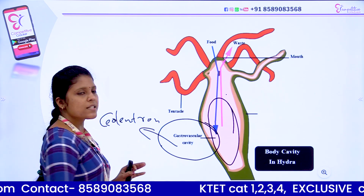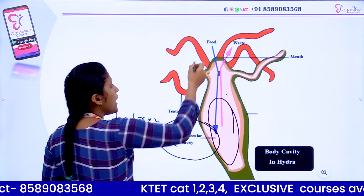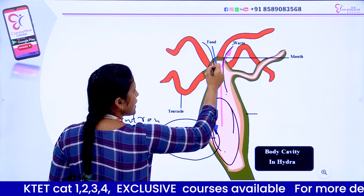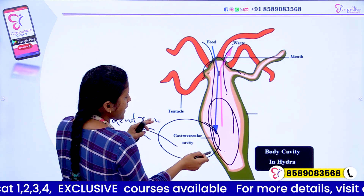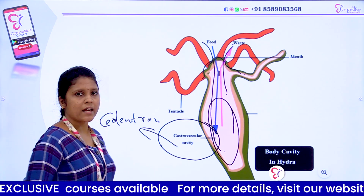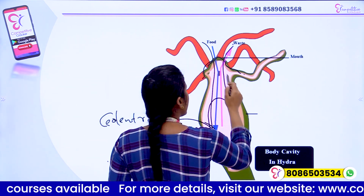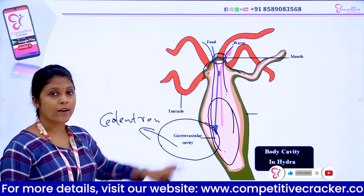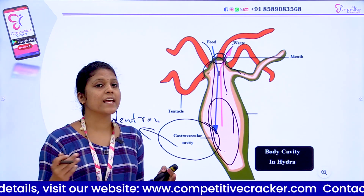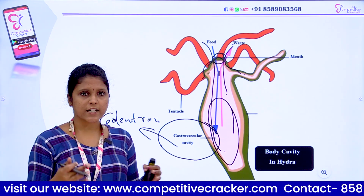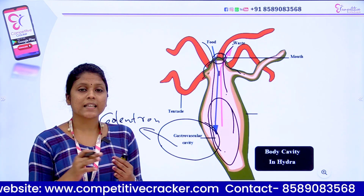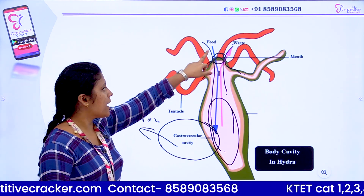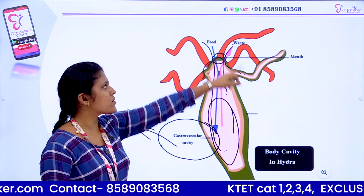This gastro-vascular cavity, the Coelenteron, is also called a blind gut or blind sac. Food enters and waste is also expelled through the mouth — it is a cloaca. That means food comes in through the mouth and waste also goes out through the same mouth.